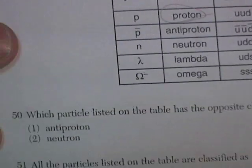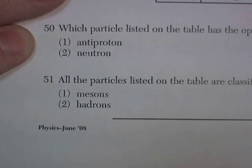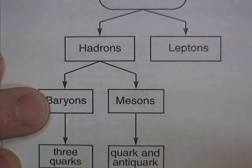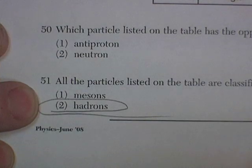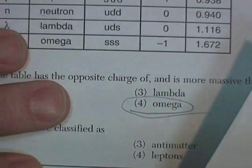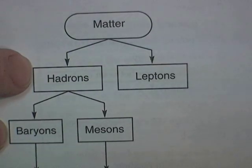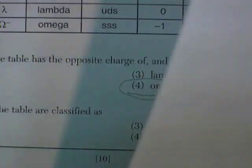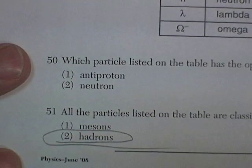Well, baryon is not one of the choices, so we look at our chart again. They're baryons, and those are all hadrons — so we have hadrons. Mesons are also hadrons, but they are only a quark and an anti-quark, so mesons is not correct. Anti-matter is true of some of these, but not all. And leptons — the most famous lepton is the electron — so it's not leptons either. So of the choices given, hadrons is the best answer.